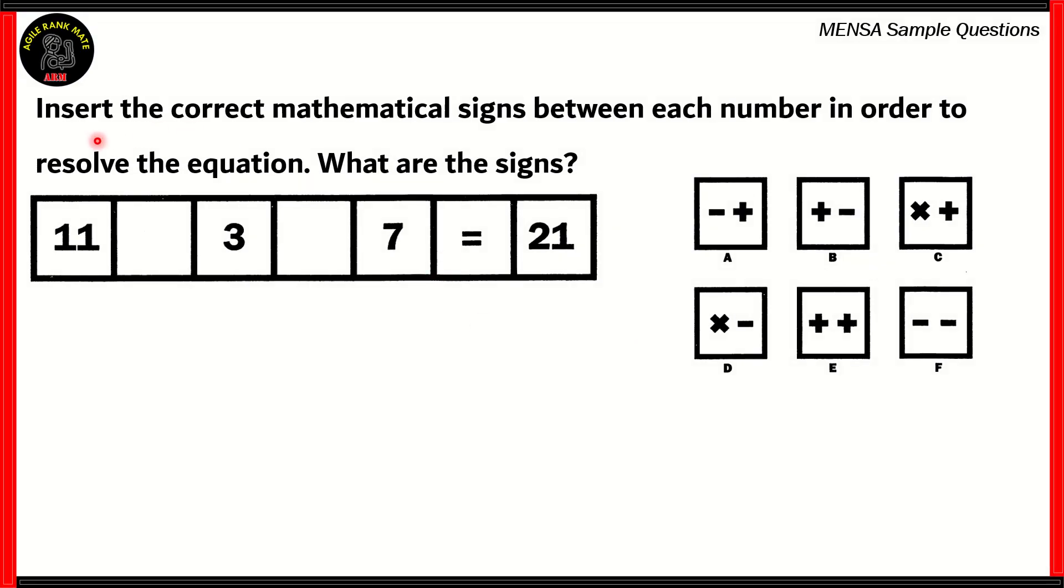Here it is. Insert the correct mathematical signs between each number in order to resolve the equation. What are the signs? So we've got a pair of arithmetic operators. They will be added to this particular equation according to their sequence. And we need to find out which of these pairs is the correct fit in order to get us the product 21.